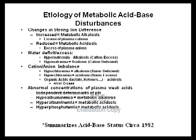The etiology of metabolic acid-base disturbances can now be reviewed far more comprehensively than with Henderson-Hasselbalch. Categories include: changes in strong ion difference (increased = alkalosis, reduced = acidosis), water deficit and excess, cation-anion imbalance, hypoalbuminemic alkalosis (anion-deficient), hypoalbuminemic acidosis (anion excess), organic acid acidosis (anion excess), and abnormal concentrations of plasma weak acids including albumin and phosphate.